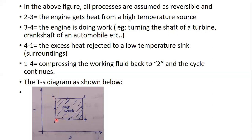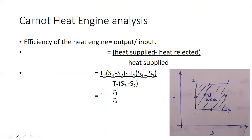Then the closing line 1 to 2. We fit a compressor to bring the fluid back from 1 to 2. It is a reversible adiabatic compression process, so the line from 1 to 2 is a vertical line going upward. The TS diagram looks like a rectangle in shape, and the net work done is represented by the area enclosed inside this diagram.